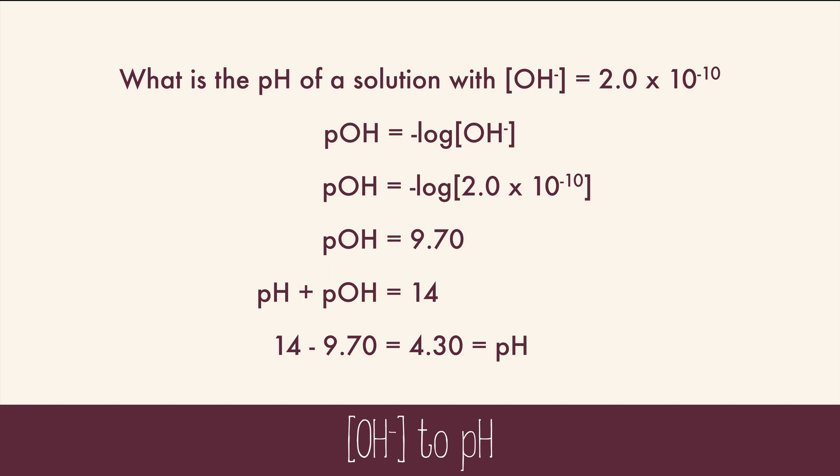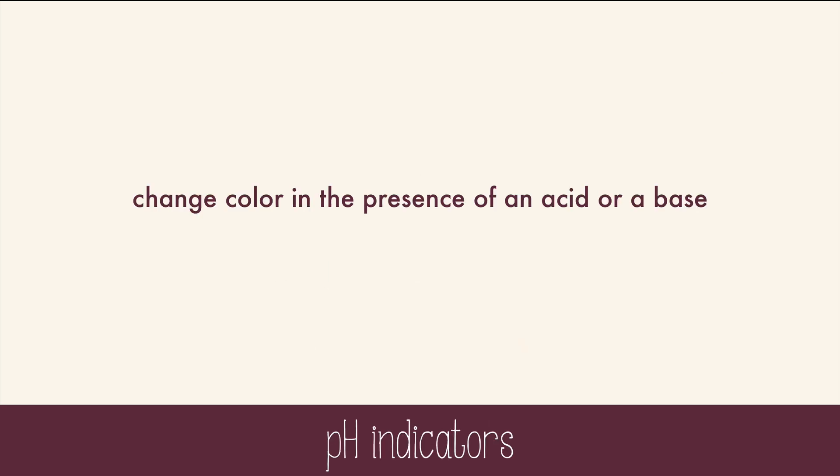A quick way to test the pH of a substance is to use indicators — they'll change color in the presence of an acid or a base. They aren't always the most reliable because temperature can distort their color, and if the substance you're testing already has a color to it, the indicator color will be difficult to see. A pH probe will be the most accurate tool for measuring pH.